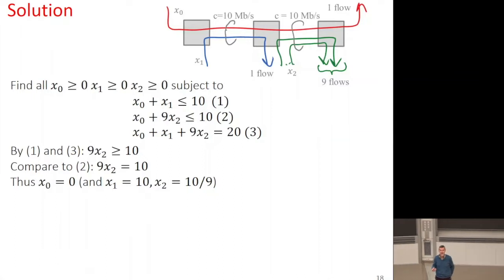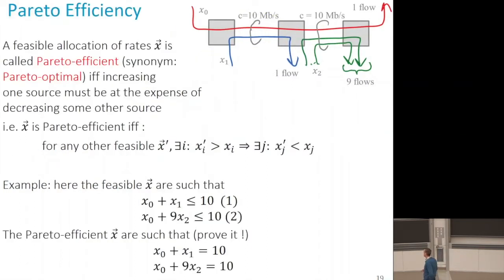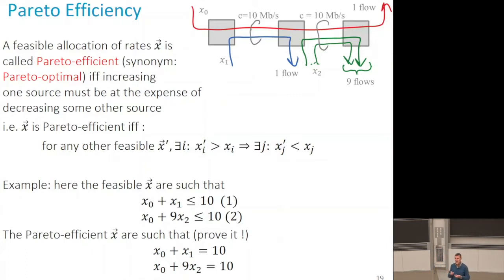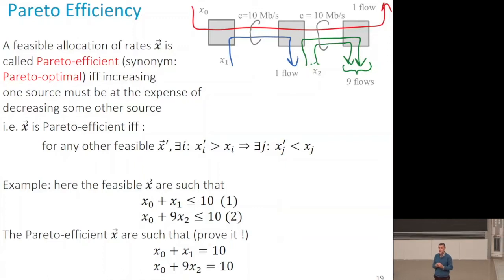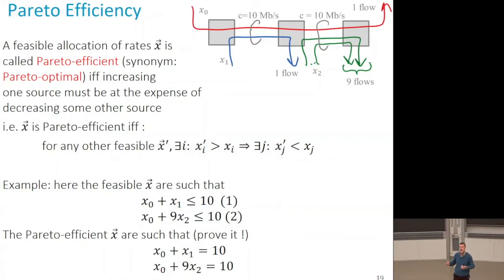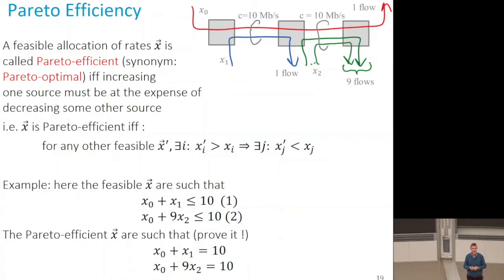This is because the red flow uses two links. Whenever you give an epsilon of capacity to the red flow, you remove it twice from the 20, so you get less than 20. This small example shows that defining maximal efficiency requires some subtlety. Maximizing the sum of the rates is not a good objective — it leads to non-desirable behavior like x0 receiving nothing, and your network does not work well. There is a fairness problem. We need to understand the classical concept of efficiency in a complex system.